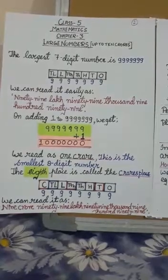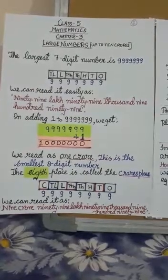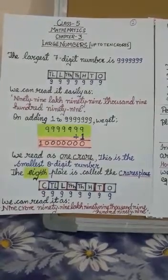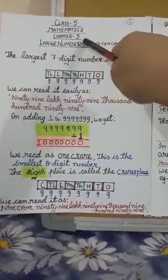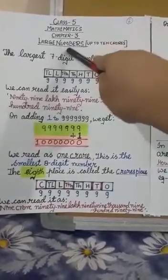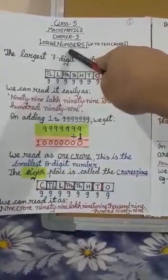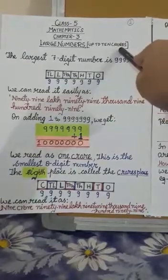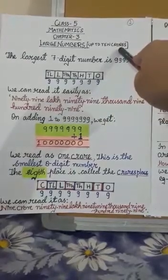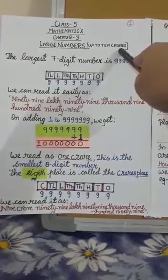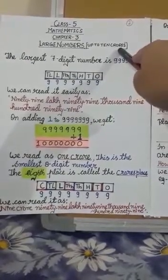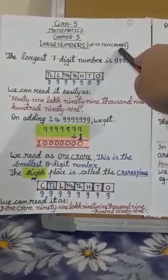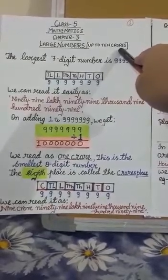Hello students, today in this class we are going to study Chapter 3: Large Numbers — numbers up to ten crores. In Class 4 you studied numbers up to ten lakhs, which were the seven-digit numbers.